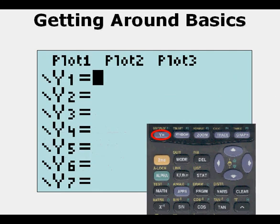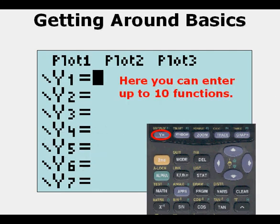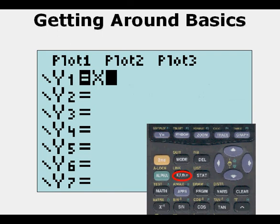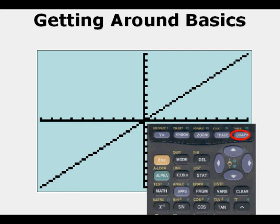If we go to Y=, here we can enter up to 10 functions. You don't see y8, y9, and y10 until you scroll down. We're going to enter y1 equal to the linear parent function x, and we enter that and we see the line here.